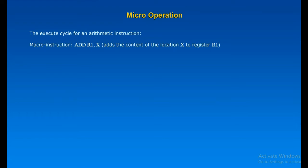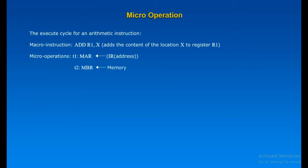Consider another ADD instruction: ADD R1, X, where X is a memory location's address. This instruction requires three cycles. In the first cycle, the content of the address part of the instruction register is copied into MAR, which points to a memory location. In the second cycle, the memory content of the location pointed by MAR is transferred to MBR. In the third cycle, the content of MBR is added to the content of R1 and the result is stored in R1.